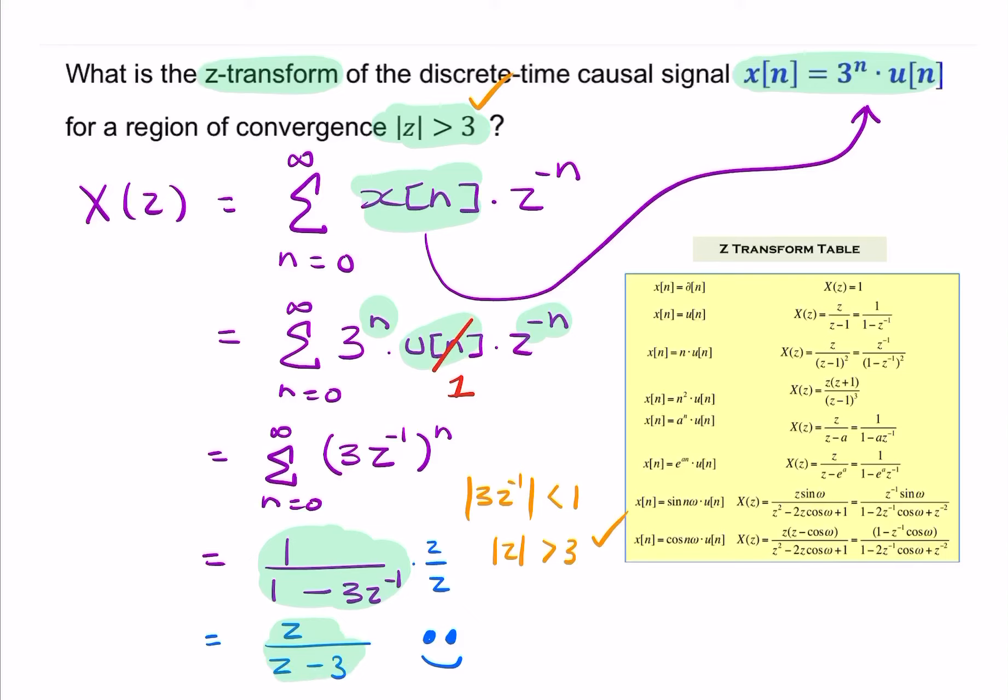But note, we could have just looked for x of n in the table. And there it is, a to the power n, where a is equal to 3. And that would have been my answer. So we could have used the table and simply said, well, a equals 3. And that's the answer.